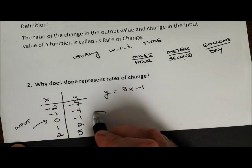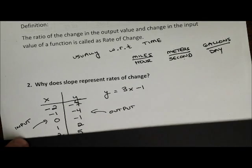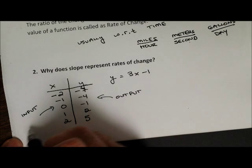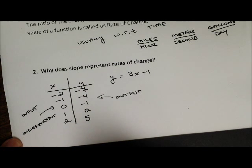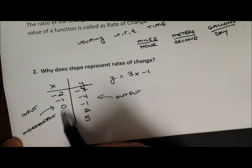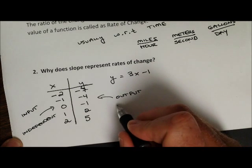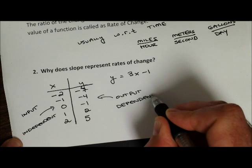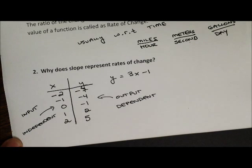These would be our output values. X can also be called the independent variable. Think about what independent means — you have choice. You can choose anything for x; these are independent. And the output values are called dependent variables. They depend on what x was.